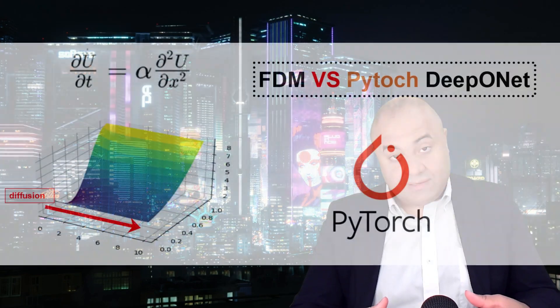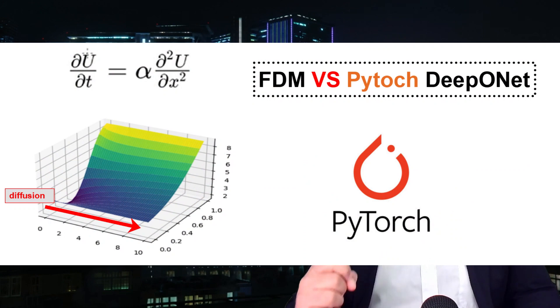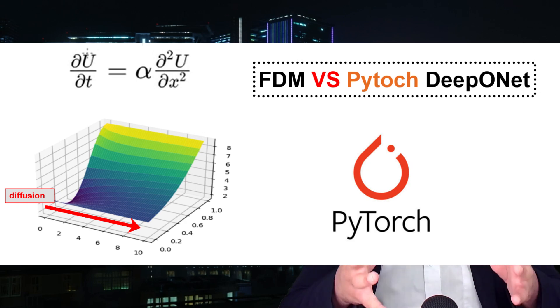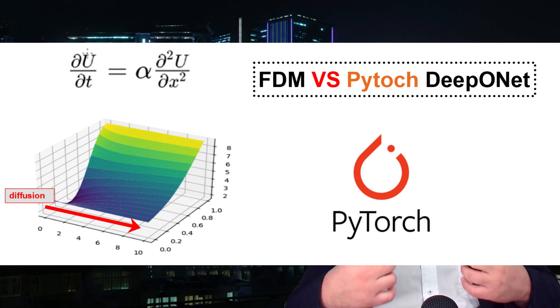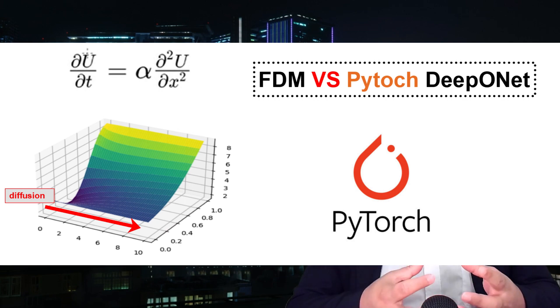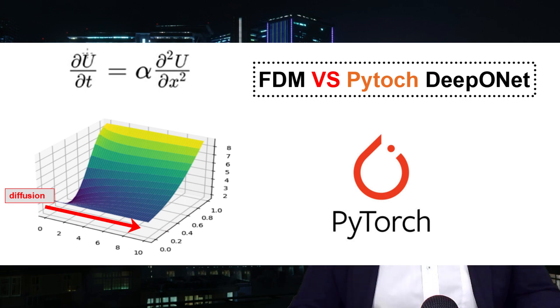After that, we will solve the heat equation with a deep neural operator. In this step, we will use PyTorch — writing code to generate the data, pre-process the data, train the network to predict the actual values, and then evaluate our results in comparison with the finite difference method.